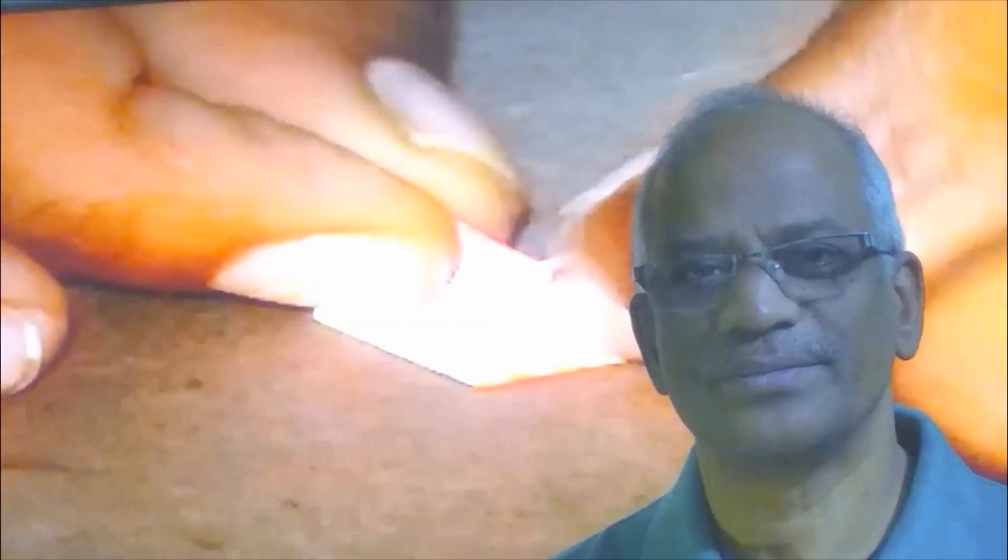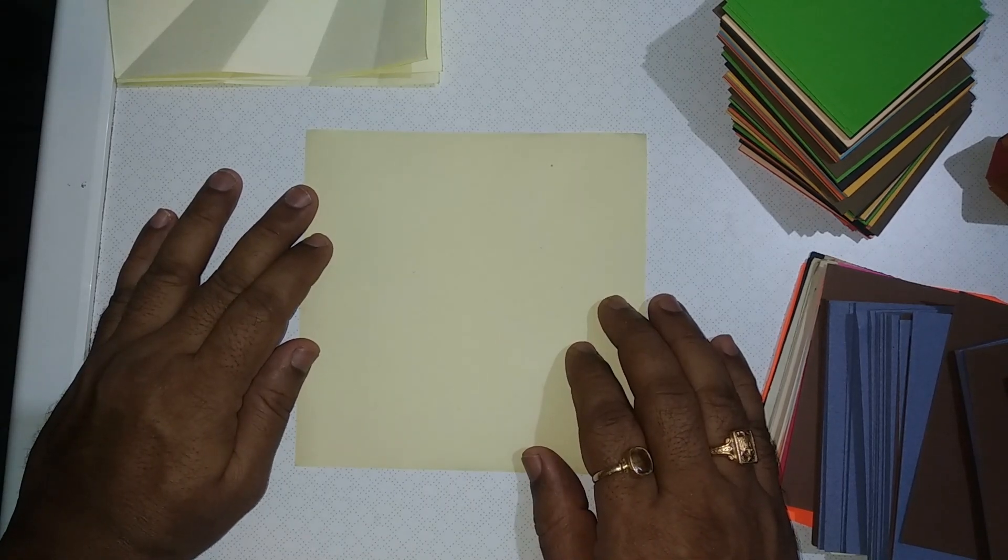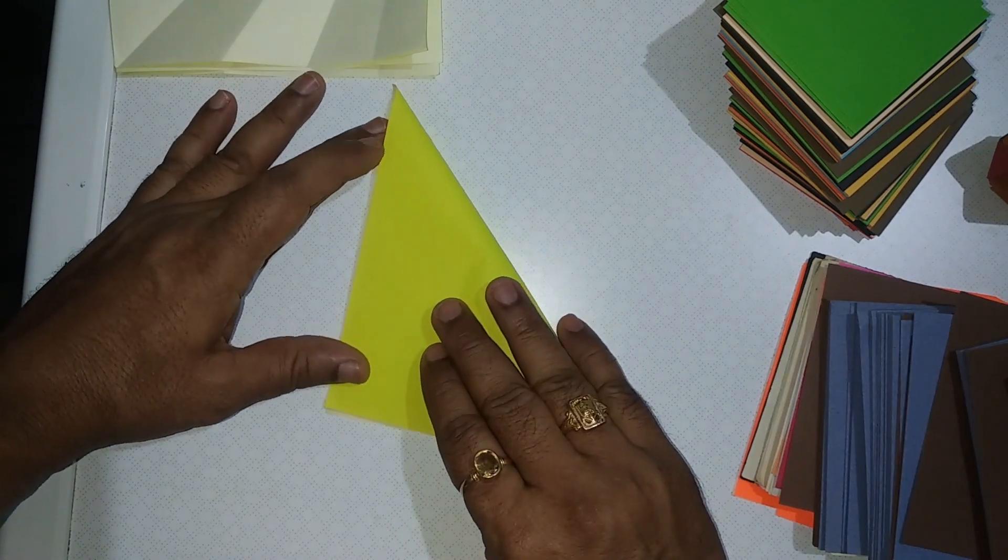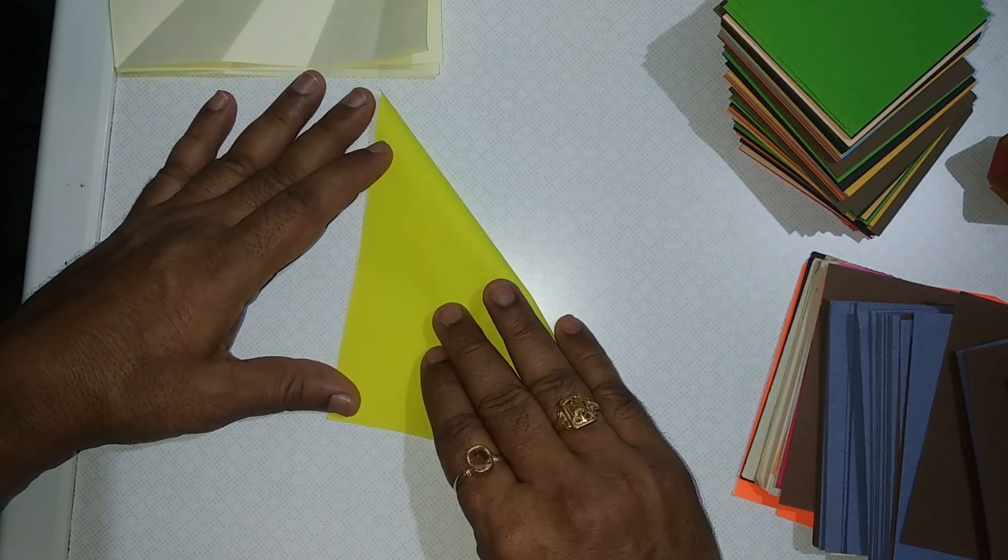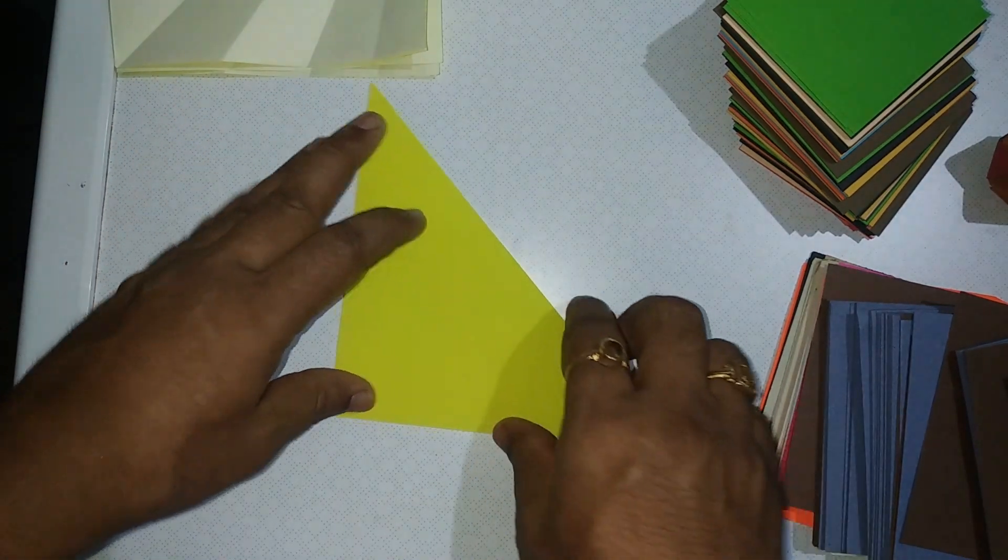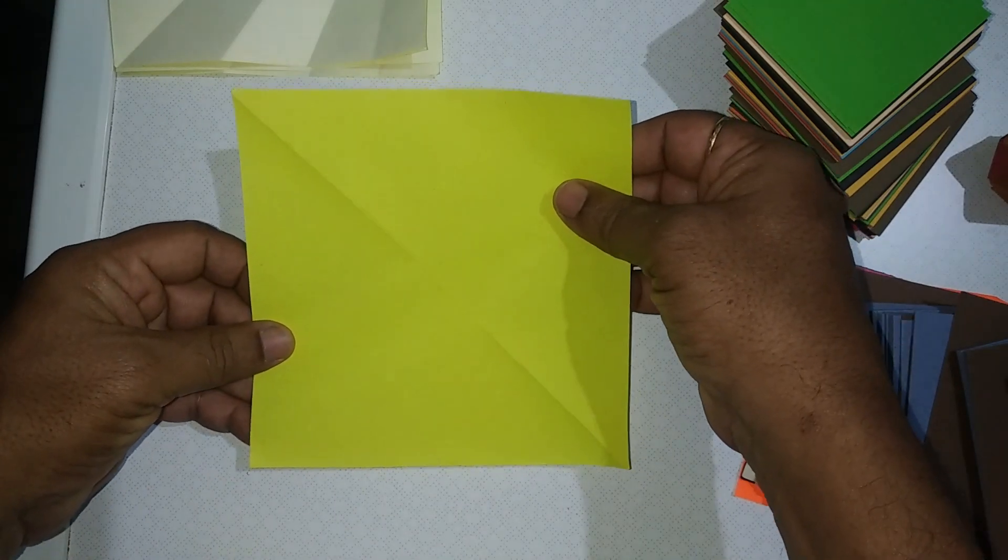Let's unfold a simple rocket folding. We take a square paper. Fold one diagonal to it to get two right angled isosceles triangles.